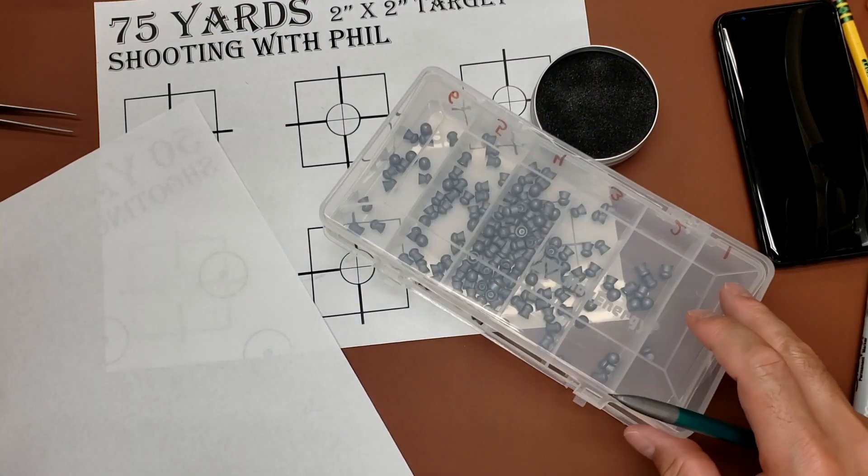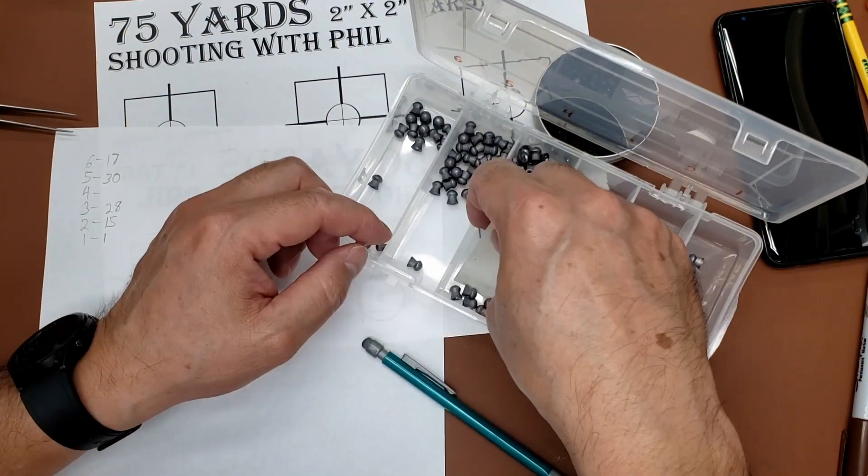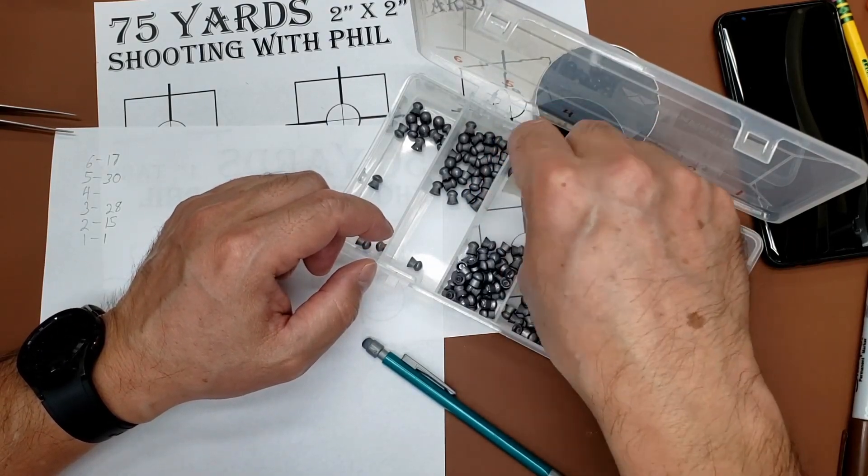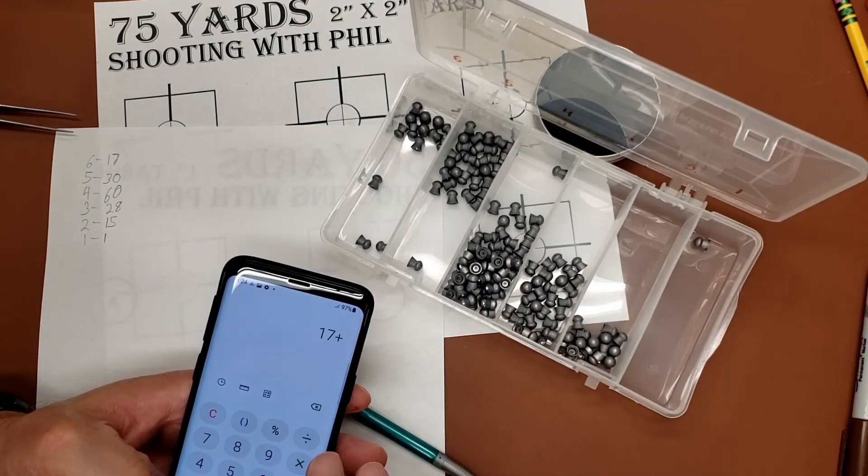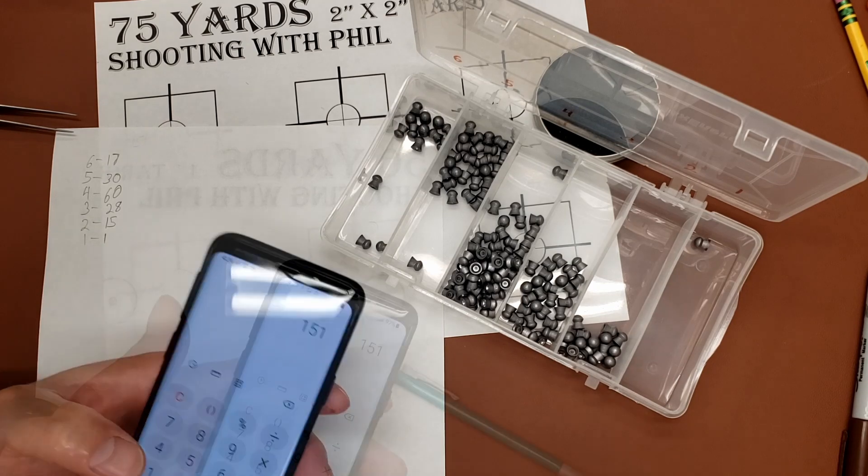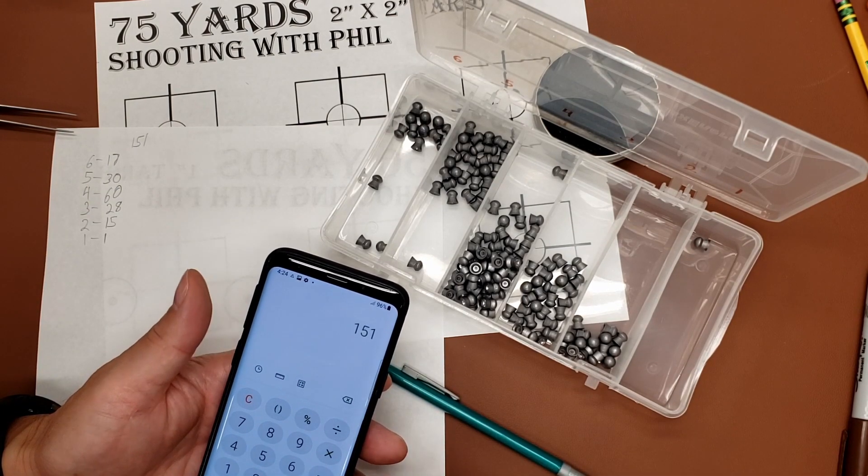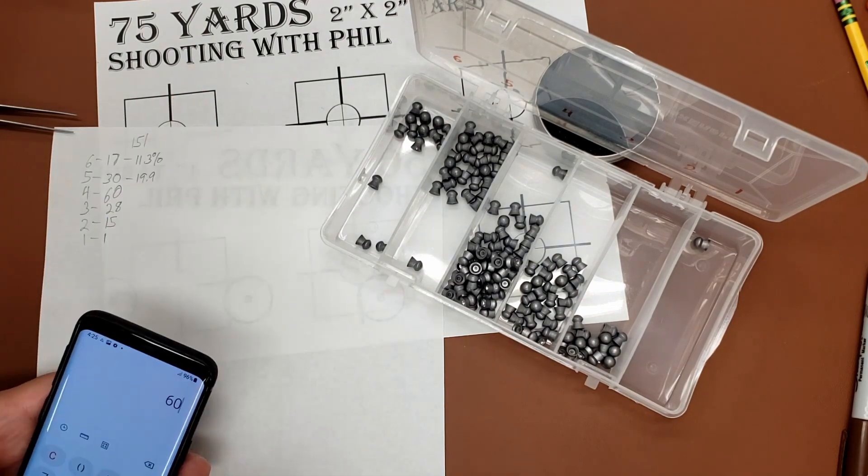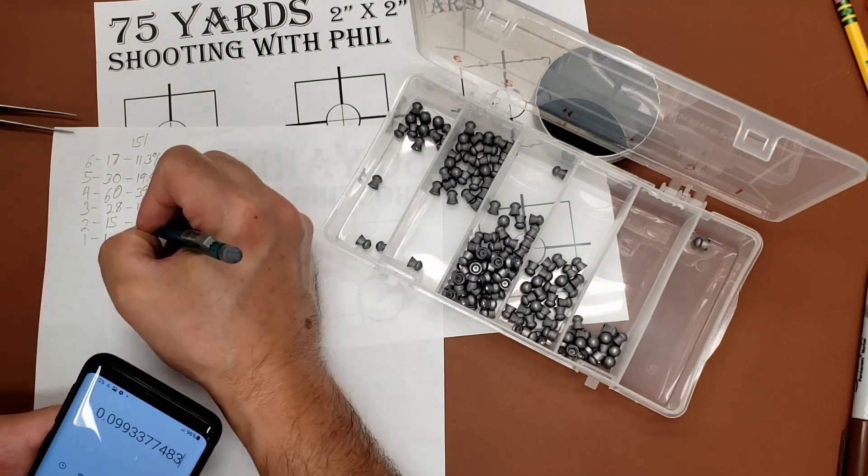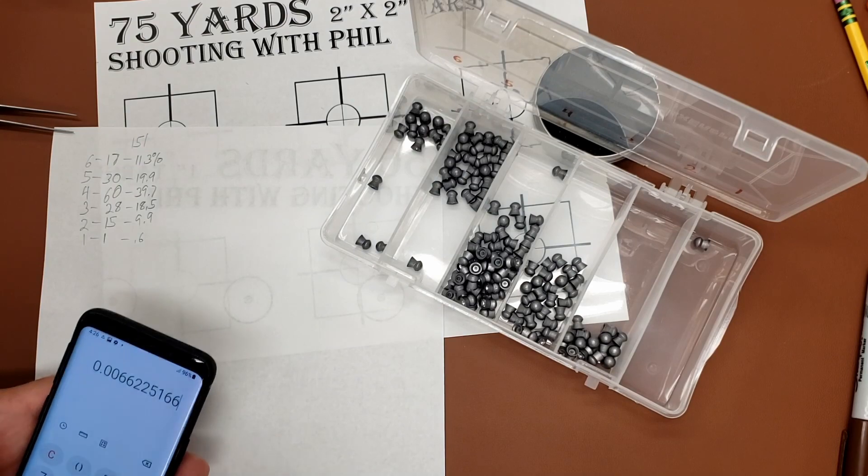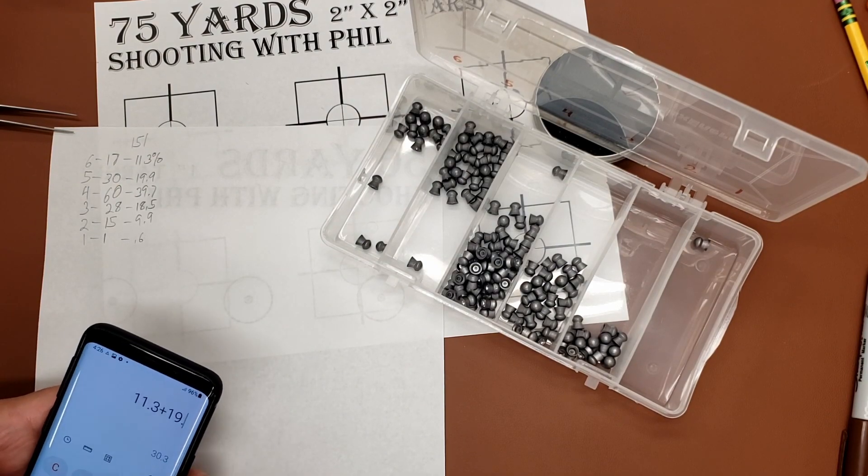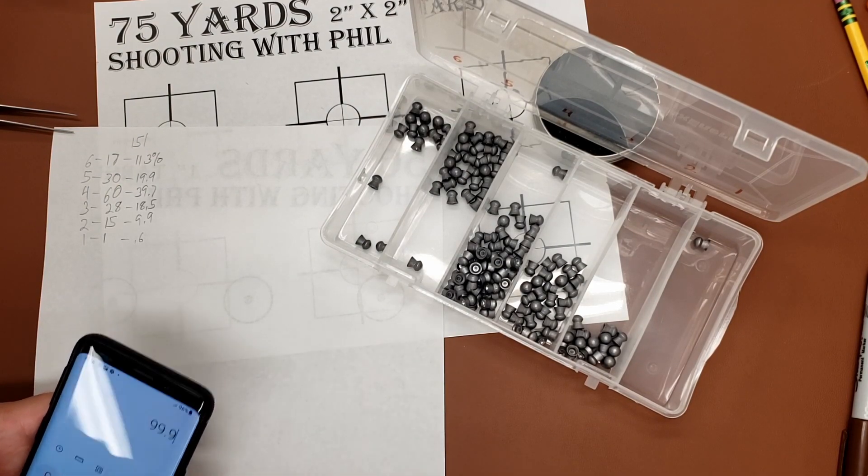Okay, ready or not, here we go. 151. So I guess our methods are proving to be reasonably robust. Do percentages. Add all those up, see if we get close to 100. 99.9.